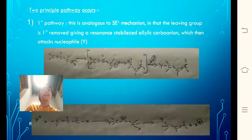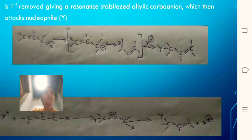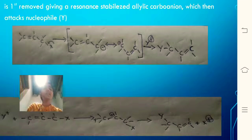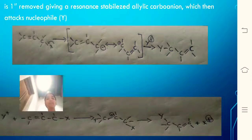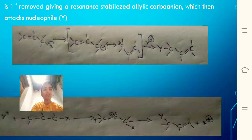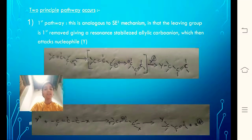In the second pathway, an alternating mechanism operates where the electrophile is first attacked by the electron-rich pi bond, leading to the formation of an intermediate carbocation, which then loses the leaving group, giving rise to a double bond at the adjacent position. As shown, there is a double bond at the allylic position with X; this double bond attacks the electrophile Y⁺, and as a result we get the carbocation intermediate.